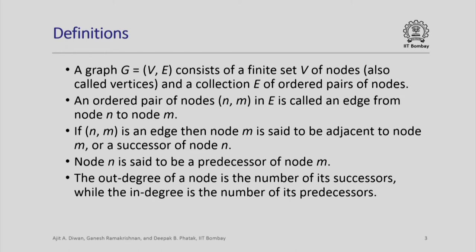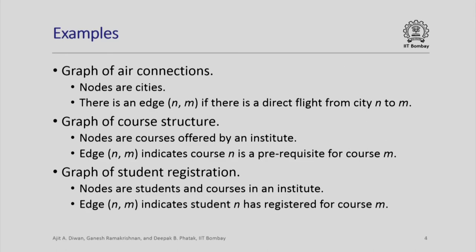The out-degree of a node is the number of its successors and the in-degree is the number of its predecessors. Let us look at some examples of graphs — a graph of air connections, for example.